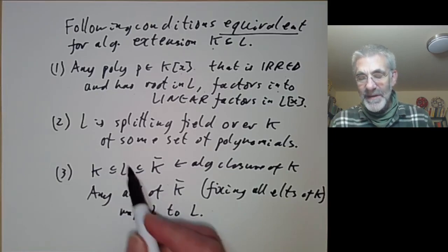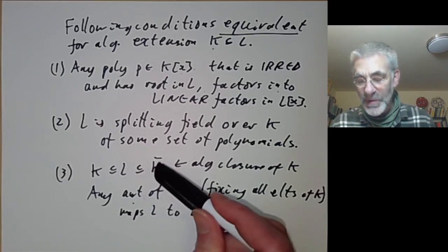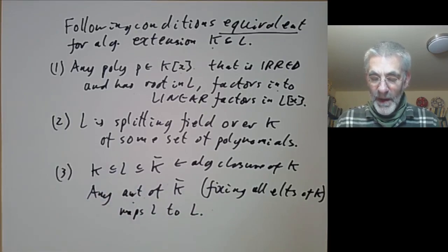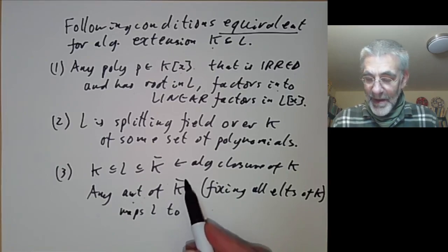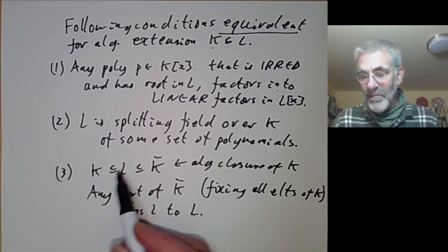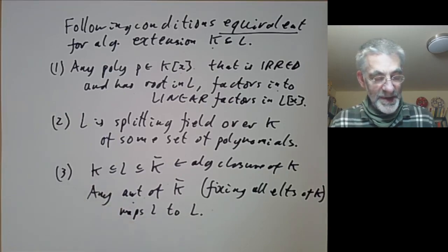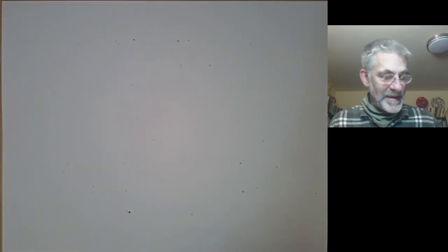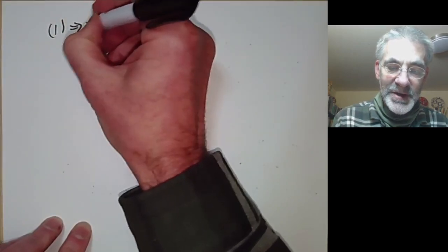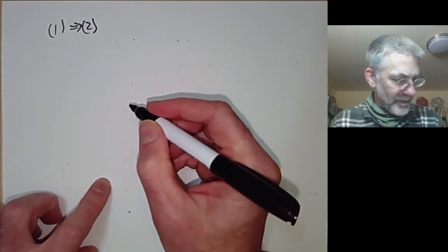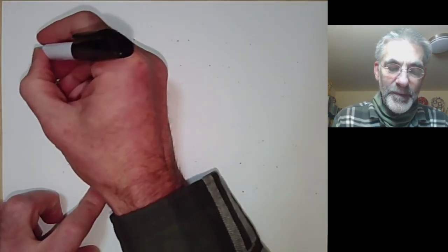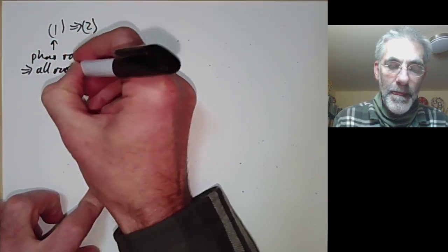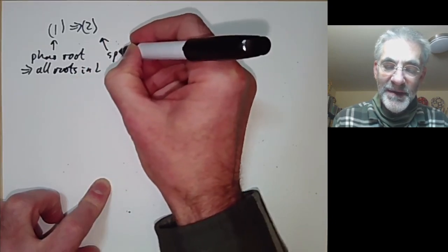So condition three says L is fixed under automorphisms of the algebraic closure of k that fix all elements of k. The automorphisms of the algebraic closure are more or less the absolute Galois group of k, as we will see later. All three conditions are fairly easy to prove. Let's first prove that condition one implies condition two. Condition one says that p having a root implies all roots are in L, and condition two says that L is a splitting field.